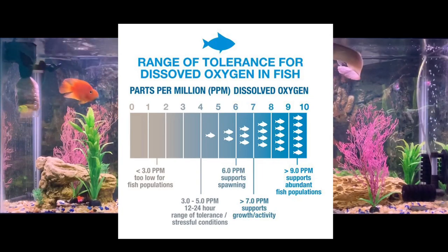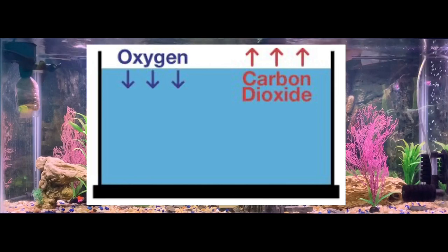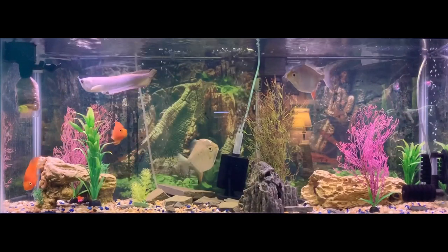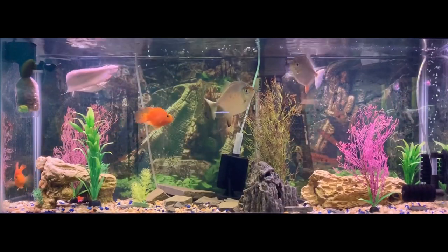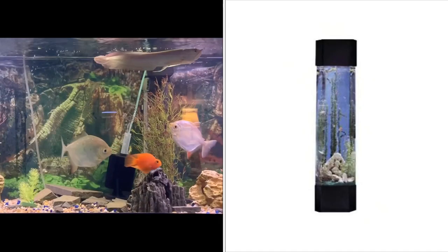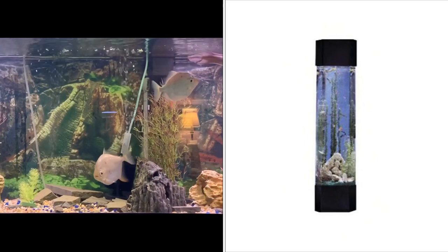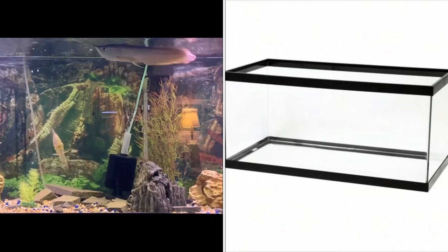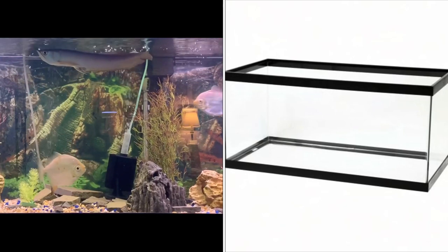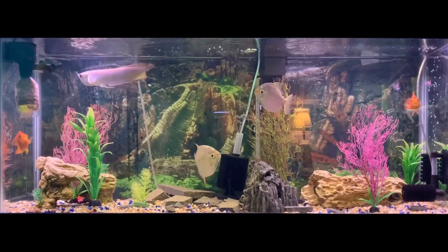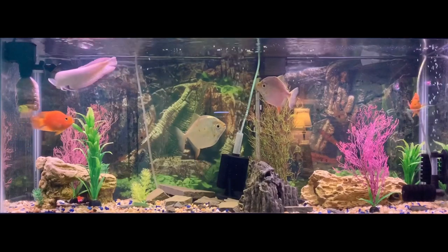The water surface is the main place where gas exchange takes place — oxygen is dissolved down into the water, carbon dioxide is released out into the air, and other gases readily pass through the permeable surface of the water as well. This is the reason why taller tanks can't support as many fish or as much bio load as wider or longer ones, because they don't have the same surface area. The surface area of the tank is where the gas exchange takes place — the more surface area, the easier the tank breathes.